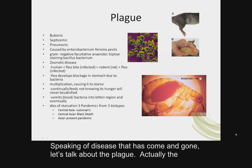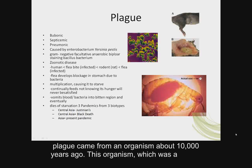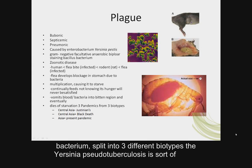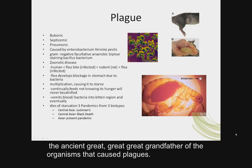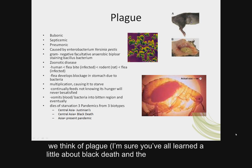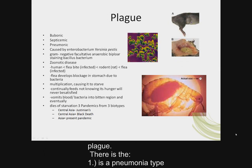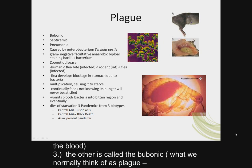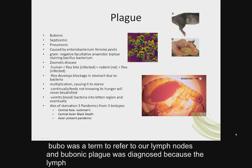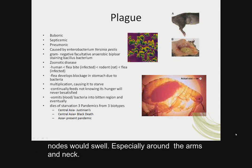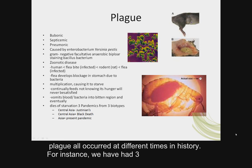Speaking of disease that has come and gone, let's talk about the plague. It came from an organism about 10,000 years ago — a bacterium that split into three different biotypes. Yersinia pseudotuberculosis is sort of the ancient great-great-great-grandfather of the organism that caused plague. There are actually three types of plague: the pneumonic type, the septicemic type where the patient bleeds out, and bubonic plague — what we normally think of. Bubo referred to lymph nodes, and bubonic plague was diagnosed because the lymph nodes would swell, especially around the arms and neck.